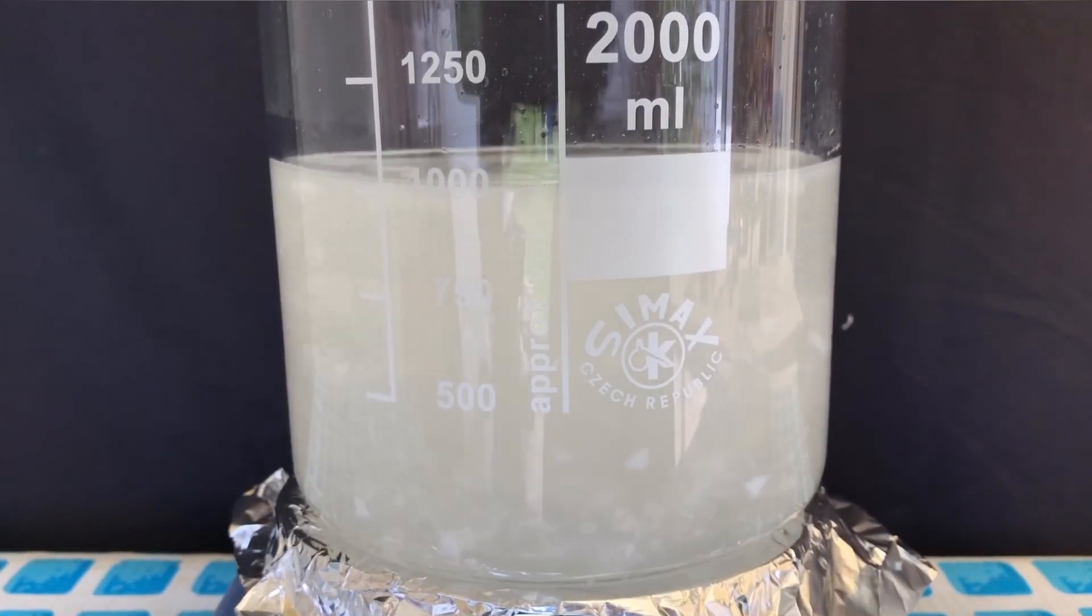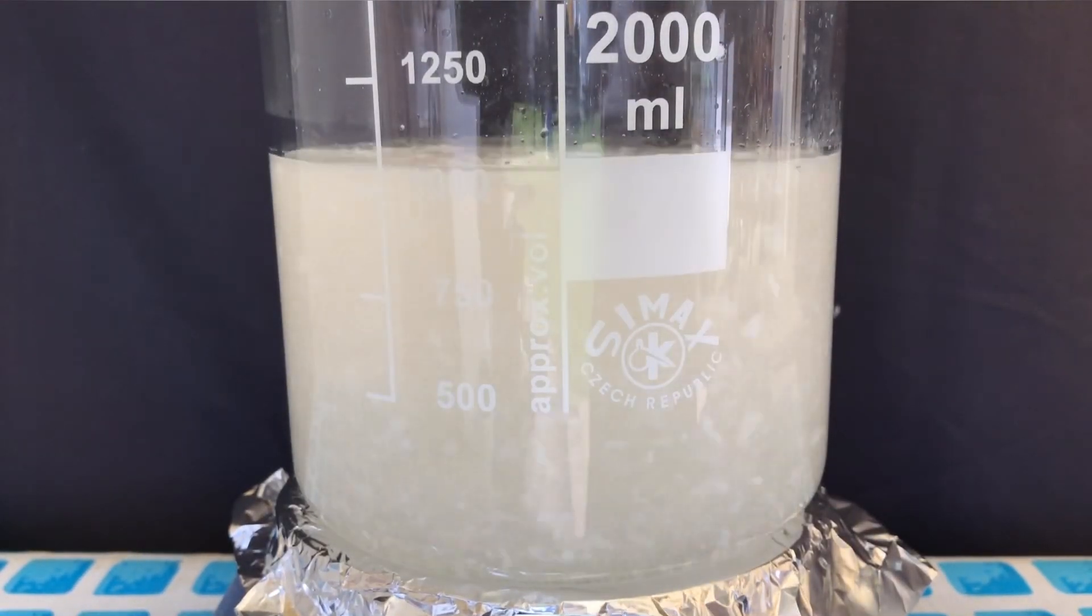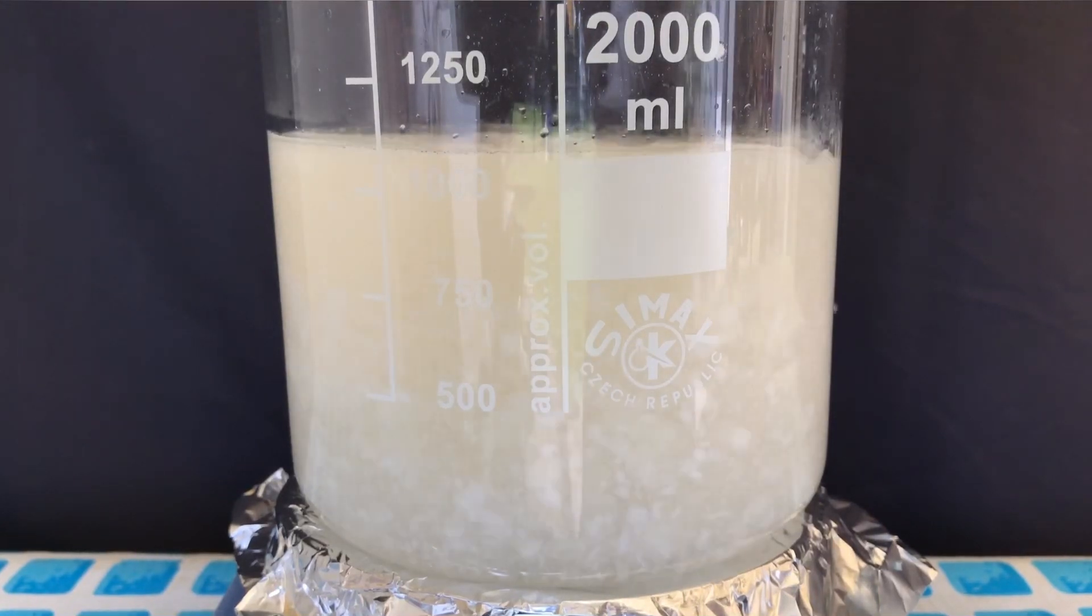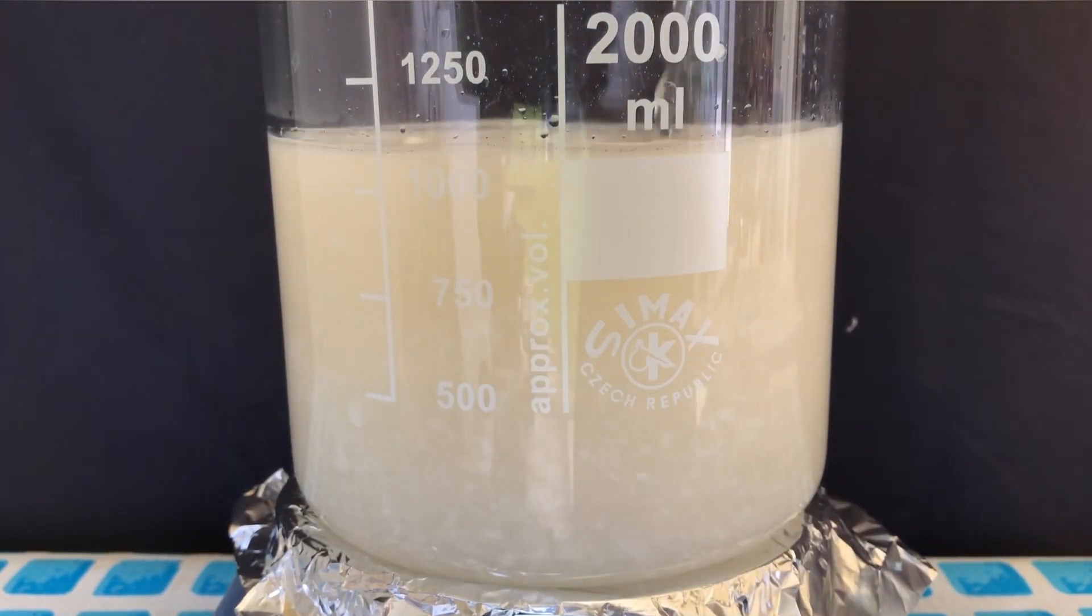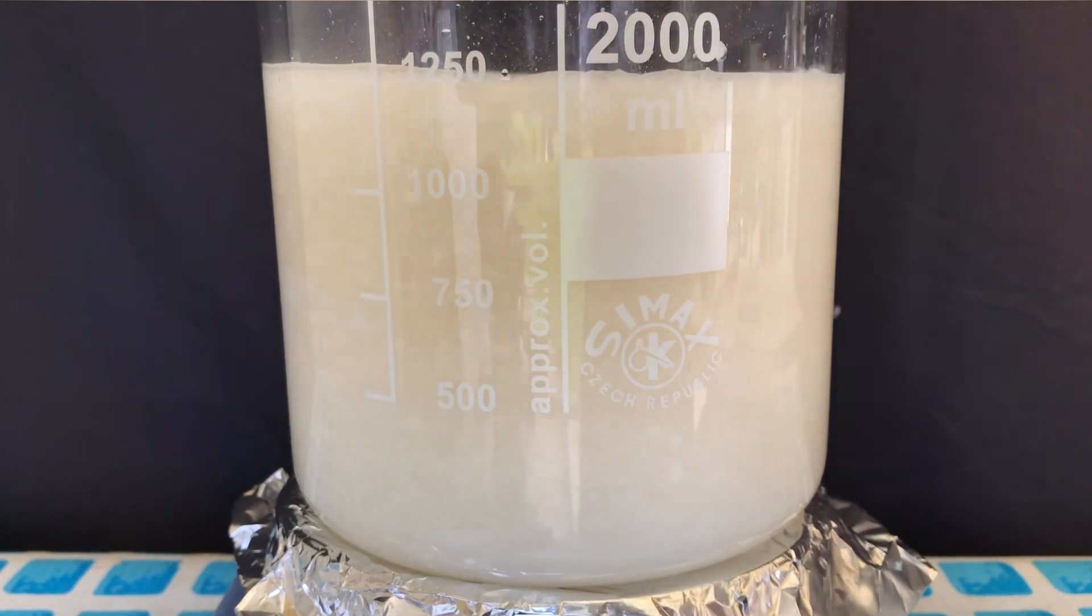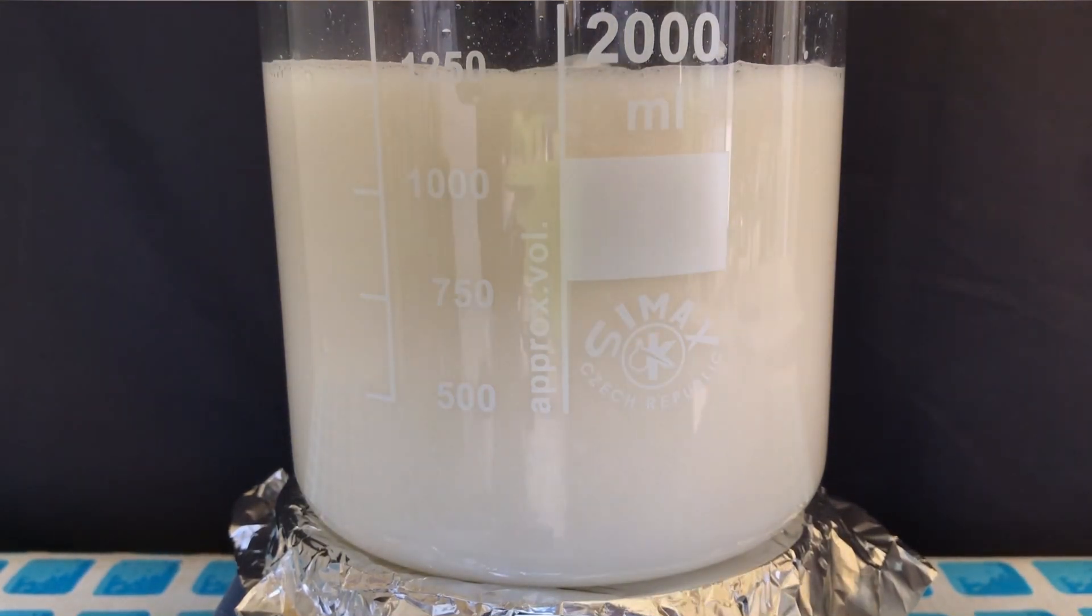The sodium hydroxide solution was added really slowly to the calcium chloride and hydrogen peroxide solution. What you see here is calcium hydroxide, which immediately reacts with the hydrogen peroxide to form calcium peroxide.